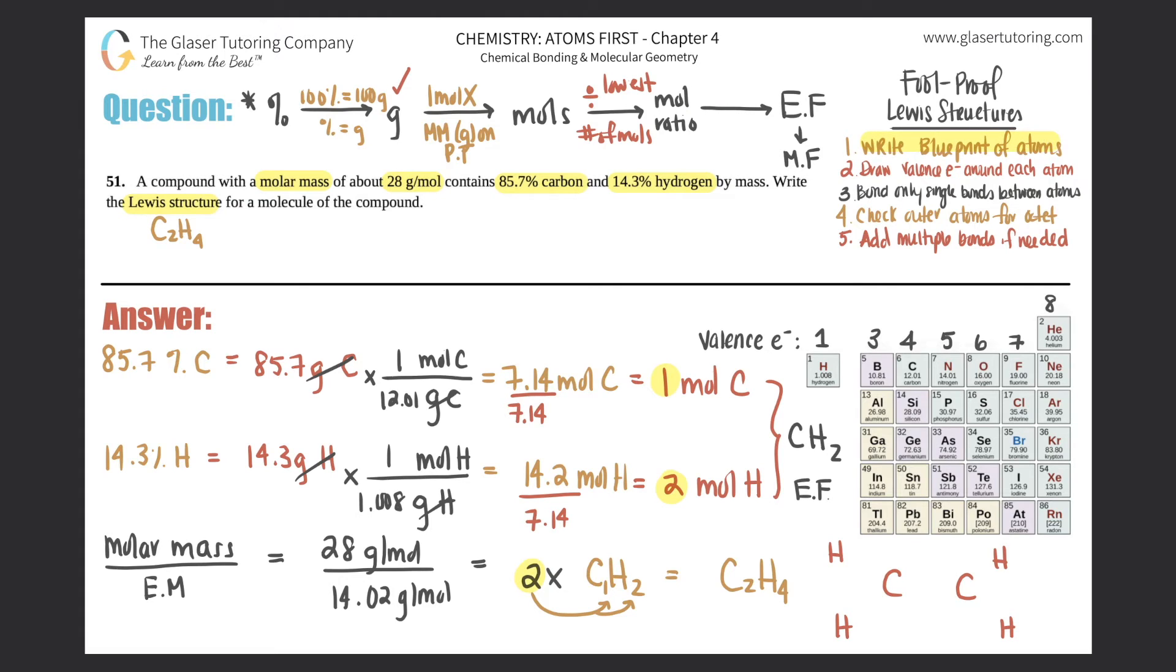Now I'll draw valence electrons around each atom. So each hydrogen has one valence and each carbon has four. So I'm just going to put those dots around those. Each hydrogen has one - one, two, three, and four - and then each carbon has four. So each hydrogen has one, each carbon has four.